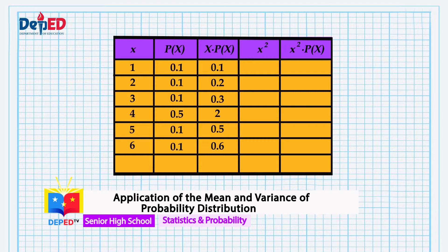This time, let's fill the column with the label x squared. Let's square each term. The square of 1 is 1, 2 is 4, 3 is 9, 4 is 16, 5 is 25, and 6 is 36. Did we get the same values? If yes, then we are doing well.